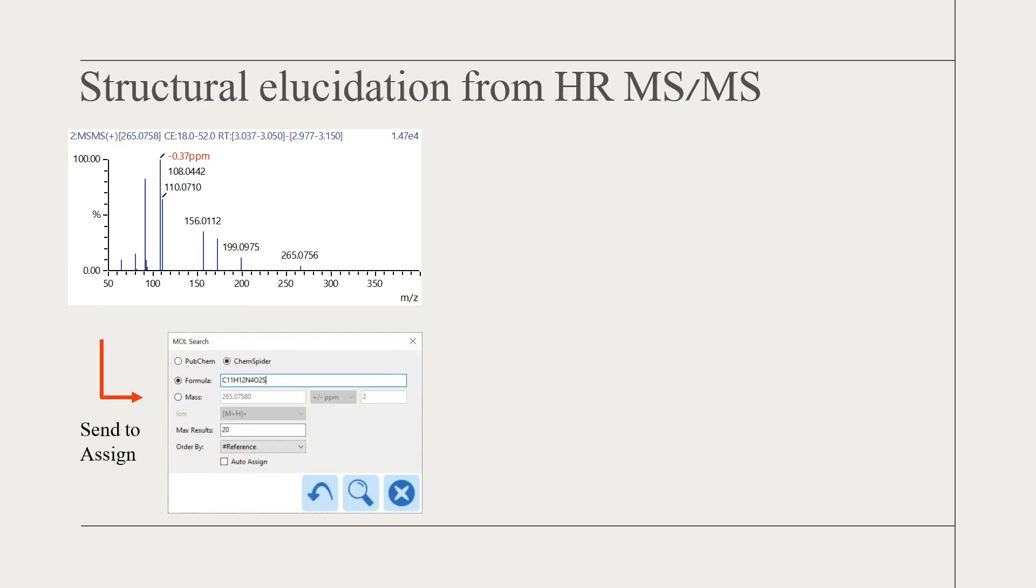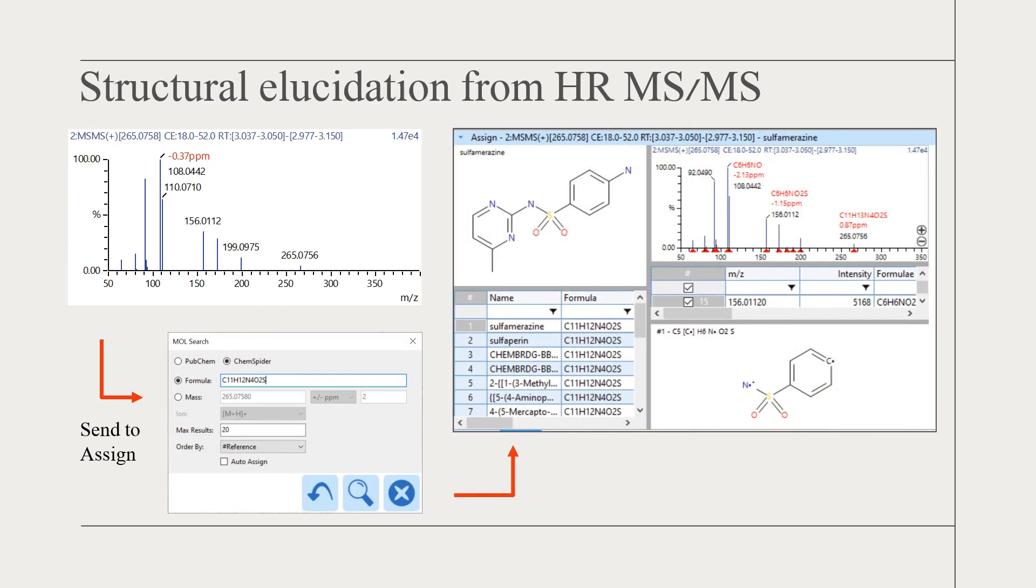Furthermore, using the accurate MS/MS spectrum, it is possible to identify an unknown compound. First, the MS/MS spectrum is sent to a program called Assign. We can select ChemSpider or PubChem database for compound database search. This database search generates a list of candidates. As we can see, sulfamerazine is found as the first candidate. If we click on Assign, the MS/MS peaks are annotated based on the found structure. This fragment annotation provides further support to the structure.